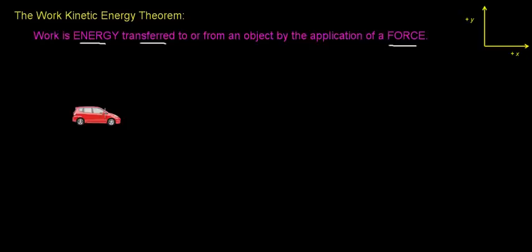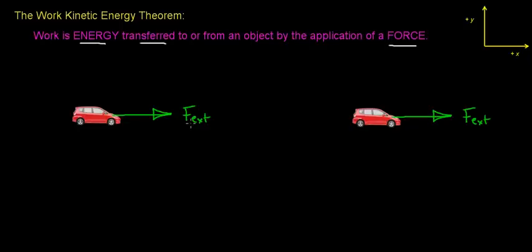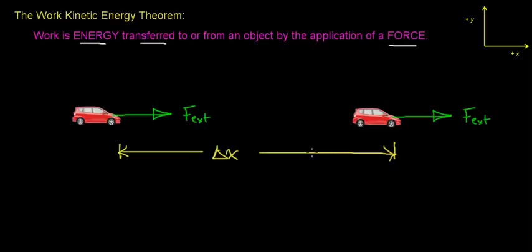To derive the work-kinetic energy theorem, we're going to transfer kinetic energy to a car by the application of a force. Imagine we're either standing behind this car pushing it in the forward direction, or standing in front with a rope or chain attached, pulling it in that direction. This external force causes the car to move a total distance, delta x, in the forward, positive x direction.